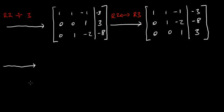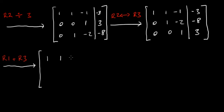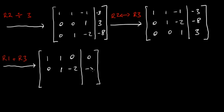I'm going to take row one and add row three. So: 1+0=1; 1+0=1; minus 1+1=0; minus 3+3=0. Row two is unchanged: 0, 1, minus 2, minus 8. Row three is unchanged: 0, 0, 1, 3.